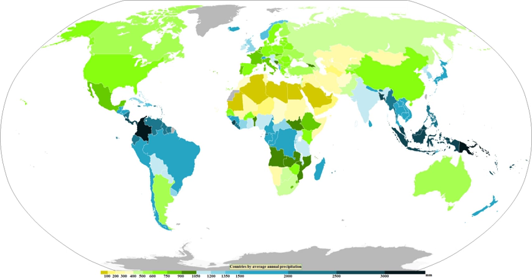Additional sensor channels and products have been demonstrated to provide additional useful information including visible channels, additional IR channels, water vapor channels and atmospheric sounding retrievals. However, most precipitation data sets in current use do not employ these data sources.